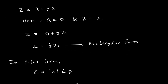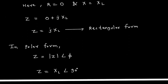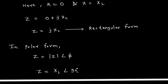We can represent a phasor in two forms: rectangular form and polar form. In polar form, Z equals the magnitude of Z at an angle φ. Here the magnitude of Z is XL only, so Z equals XL at an angle of 90 degrees, where 90 degrees is the phase angle.